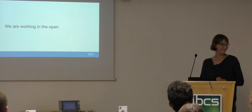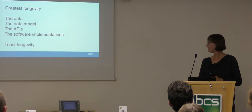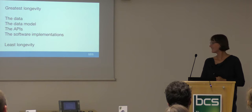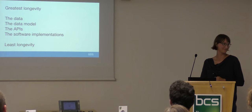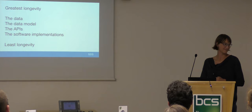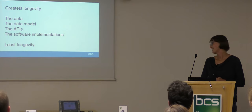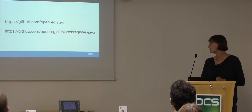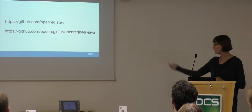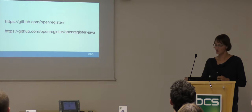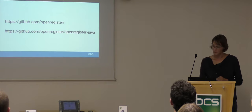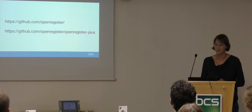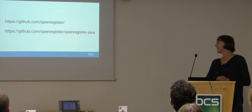The software matures like fish and data matures like wine. So you want to keep the data around for as long as possible and be able to replace the software that is delivering and processing it. We were working in the open — this is our GitHub repo. The API and platform are written in Java. Open Register Java — the first of many reference implementations — is written in Java.